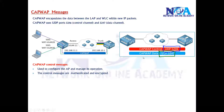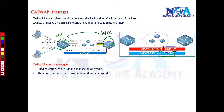Control messages include access point configuration — for example, the WLC configuring the access point or exchanging any kind of management configuration information. By default, these messages are encrypted, so whatever control messages are exchanged between the access point and the WLC are secure.